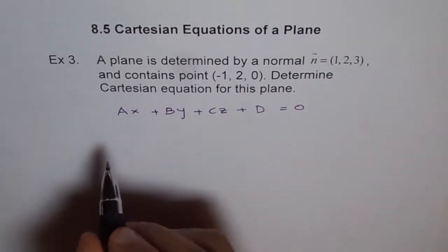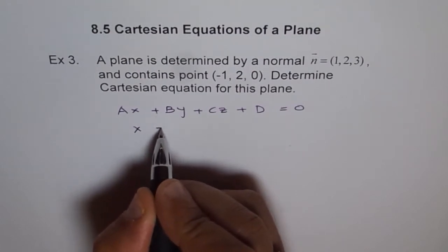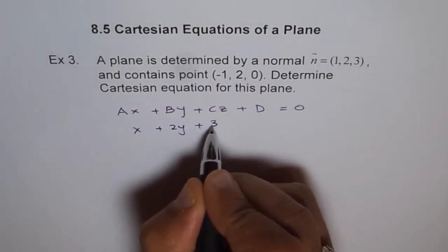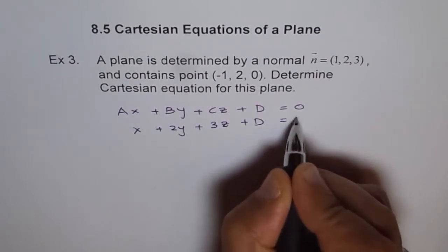So first we can put the normal here, 1, 2, 3. So we get x plus 2y plus 3z plus D equals 0.